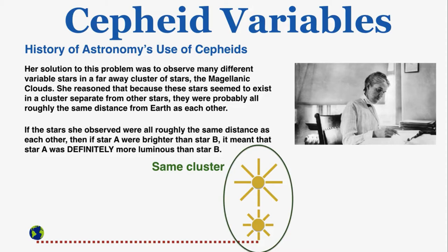If we observe two stars from Earth and have good reason to think they're the same distance away, and one star appears brighter in the sky than the other, that has to mean the brighter star is more luminous — because distance can't be affecting the brightness if the distance for both is the same.